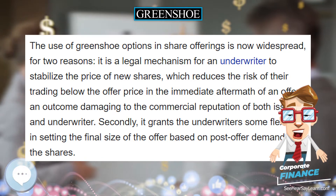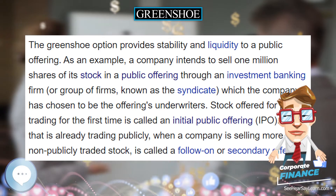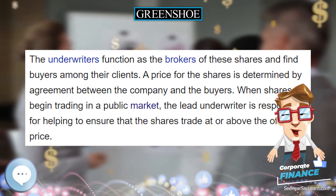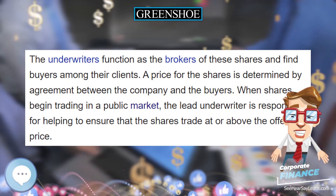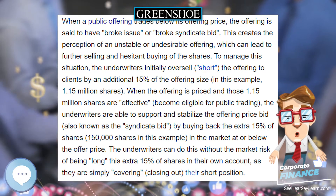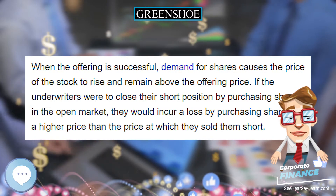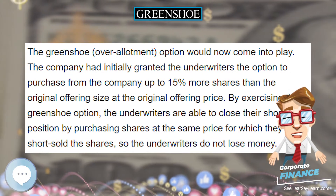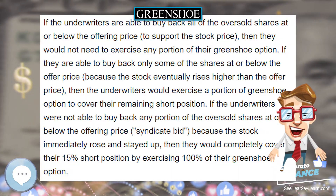Stock offered for public trading for the first time is called an initial public offering (IPO). Stock that is already trading publicly when a company sells more of its non-publicly traded stock is called a follow-on or secondary offering. The underwriters function as the brokers of these shares and find buyers among their clients. A price is determined by agreement between the company and the buyers, and the lead underwriter is responsible for helping to ensure the shares trade at or above the offering price.